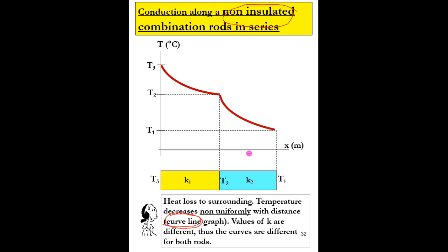To summarize the four graphs for heat conduction: if you have an insulated rod, you will get a straight line graph; if you have a non-insulated rod, you will get a curve, because heat is lost to the surrounding. That covers the temperature against distance graph for heat conduction.